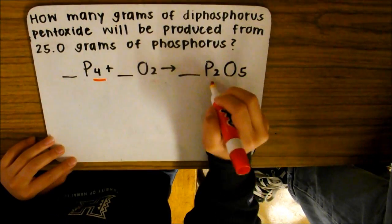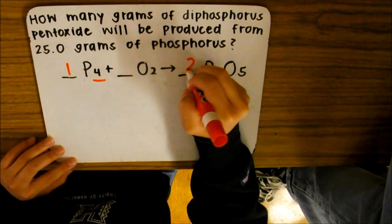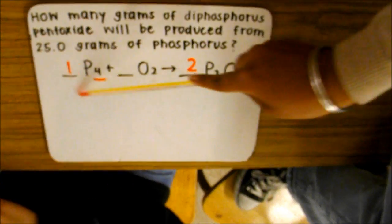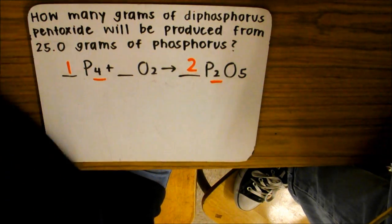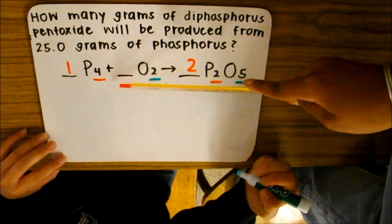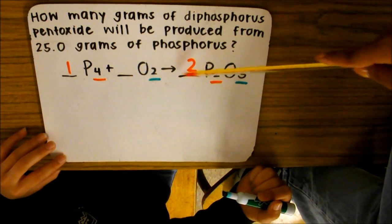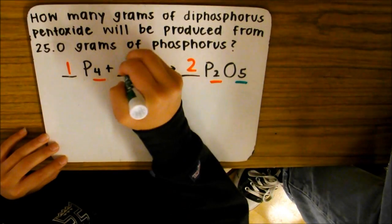On the left side there's P4, and on the right side there's P2. So on the right side we're going to put a 2 so they both equal 4. Now we're going to balance the oxygens. On the left side there's 2, and on the right side there's 5 times 2 because of the coefficient. So on the left side we're going to put a 5 so they both equal 10. And now they are balanced.